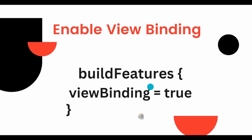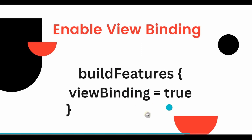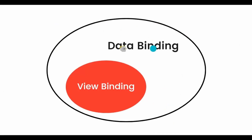To avoid such cases, view binding was introduced. This is how we enable view binding in Gradle module: build features, view binding equals true. Now, what is the difference between data binding and view binding?